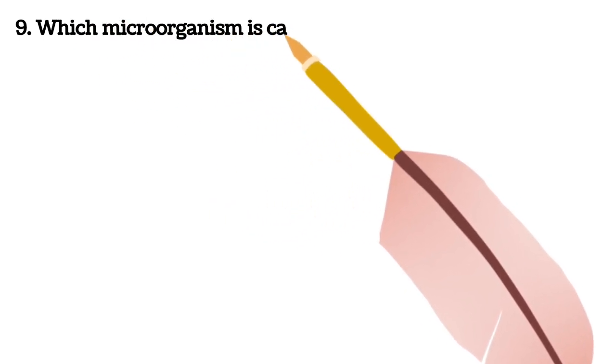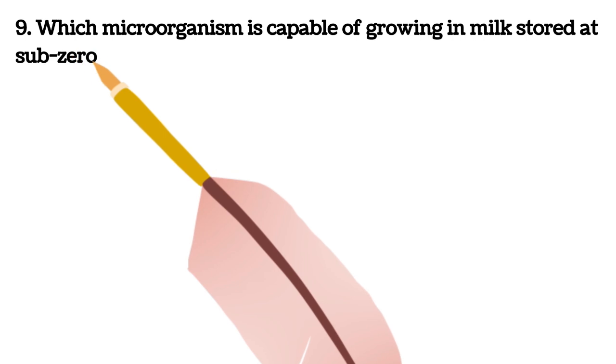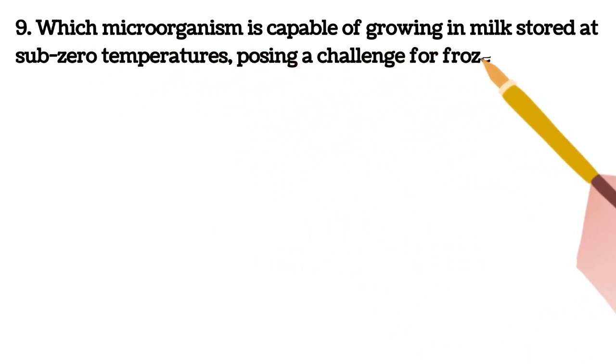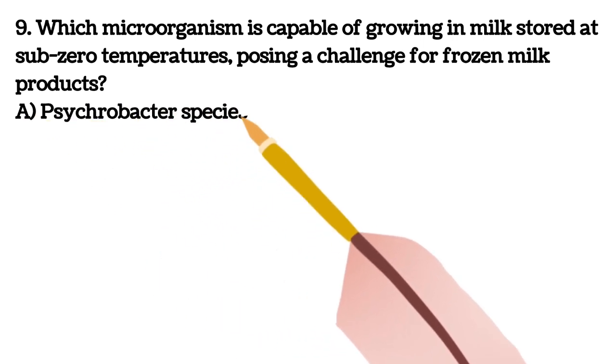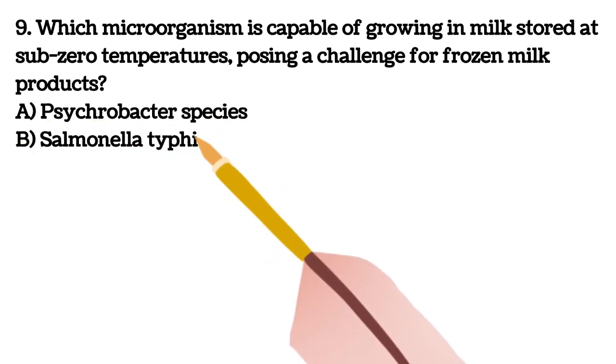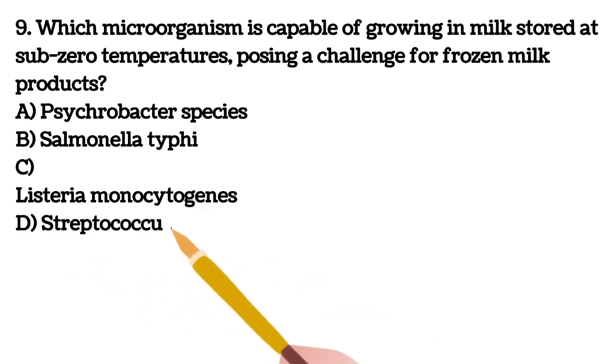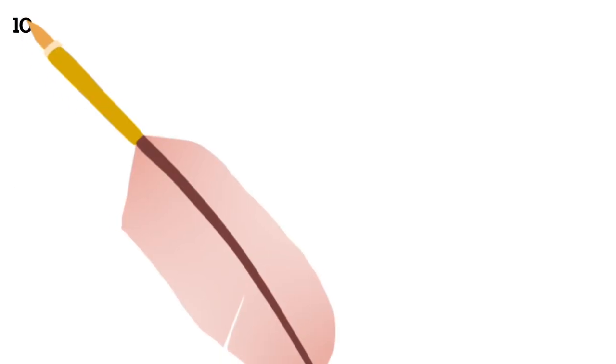Ninth question. Which microorganism is capable of growing in milk stored at sub-zero temperatures, posing a challenge for frozen milk products? A. Psychrobacter species B. Salmonella typhi C. Listeria monocytogenes D. Streptococcus agalactiae. Here answer is Psychrobacter species, A.